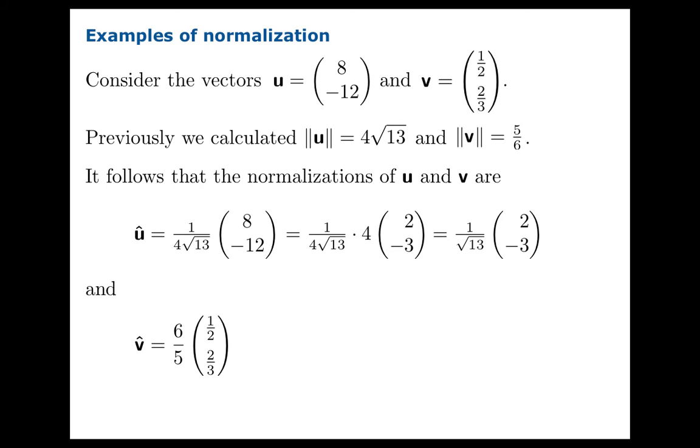And as for v, we multiply by the reciprocal of the norm. And once again, we can clean this up by letting the 6 slide into the vector and get nice integer components. Or we could write it as 3-5ths, 4-5ths. And you recognize, perhaps, those components as being coordinates of a point on the unit circle, which you know must be true. This is a unit vector.